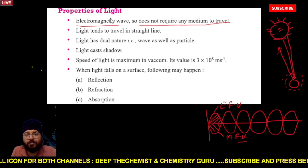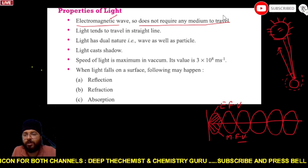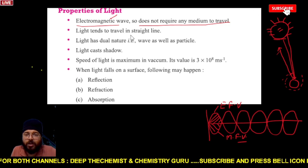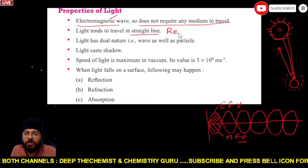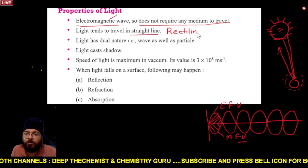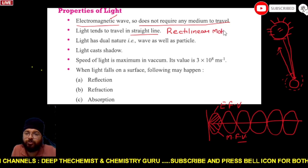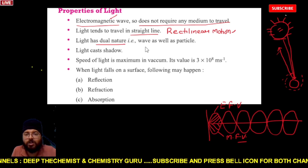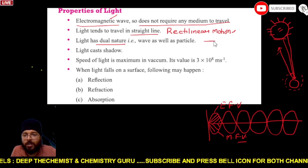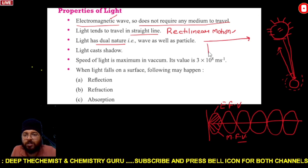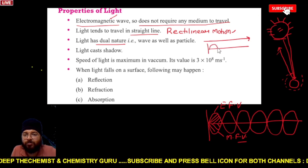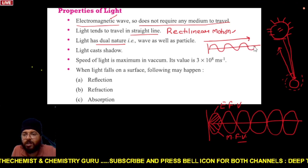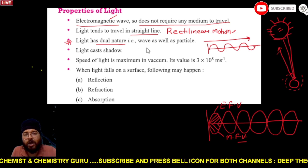Light is an electromagnetic wave which does not require any medium to travel. Similarly, light travels in a straight line, which we call rectilinear motion. Light also has a dual nature — it can travel in the form of waves and particles. This topic you will read in higher grades.